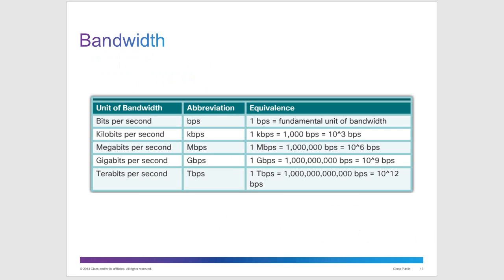Bandwidth is the optimal speed of your connection — what you have the potential to reach based on the cabling and devices you're using. It's usually measured in bits. When talking about speed, we measure in bits; when talking about storage space, we measure in bytes. There are eight bits in a byte. Bytes are used for hard drives and storage; bits are used for speed.